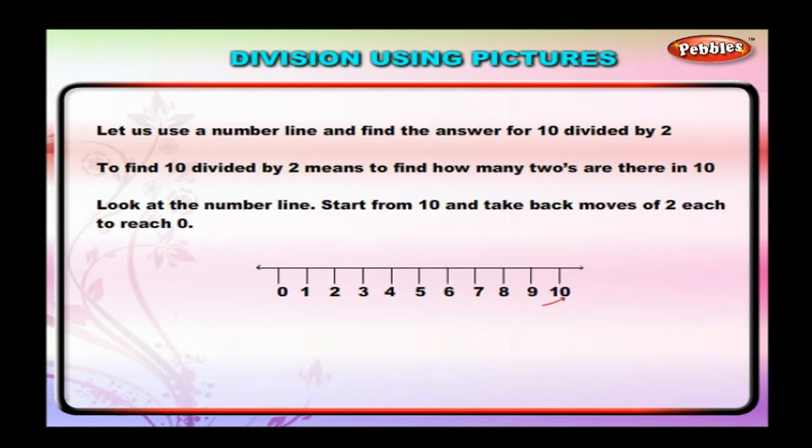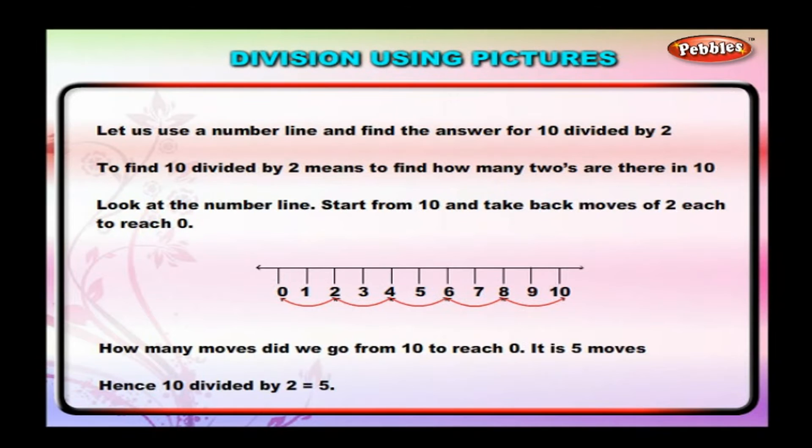Start from 10 and take back moves of 2 each to reach 0. How many moves did we go from 10 to reach 0? It is 5 moves. Hence, 10 divided by 2 is equal to 5.